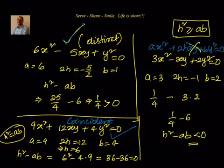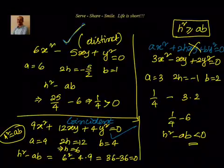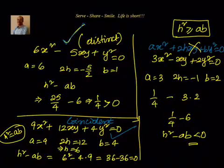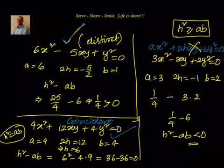So that's how, by looking at a second degree homogeneous equation ax² + 2hxy + by² = 0, we can determine whether it is a combined equation of two straight lines — the condition being H² ≥ AB. In the coming session, we will see how to find the angle between the pair of lines, and possibly how a non-homogeneous second degree equation can represent a pair of straight lines. Thanks for your time and support — I'll catch you once again. Till then, keep smiling and sharing. Bye for now.